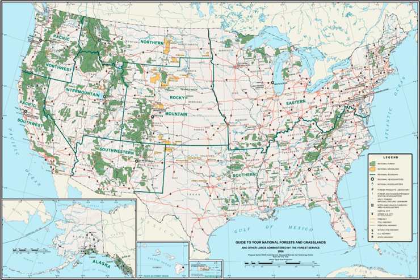National grassland is a classification of protected and managed federal lands in the United States, authorized by Title III of the Bankhead-Jones Farm Tenant Act of 1937. For administrative purposes, they are essentially identical to United States national forests, except that grasslands are areas primarily consisting of prairie.